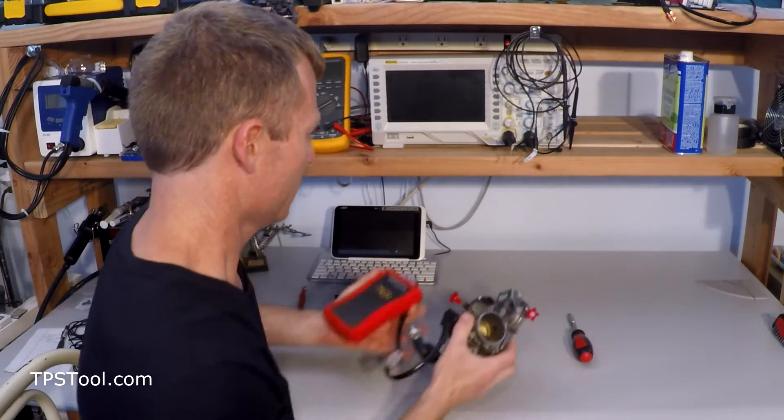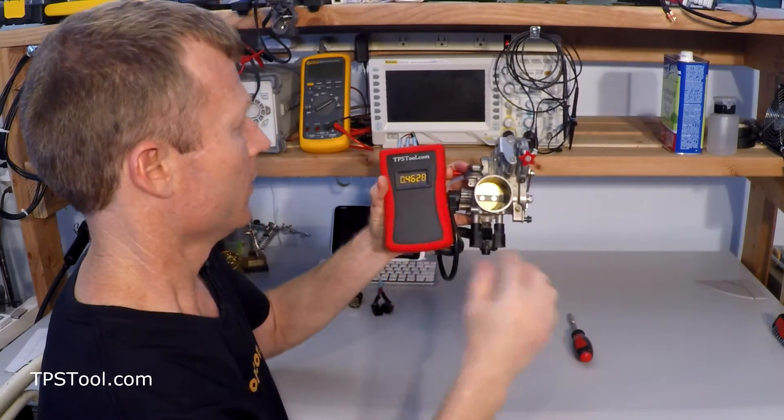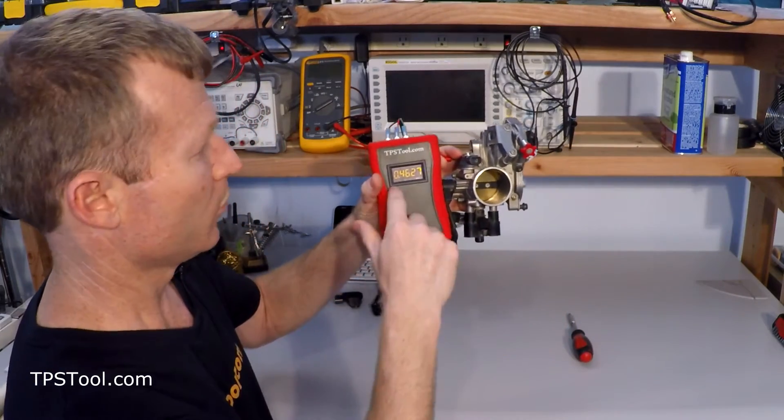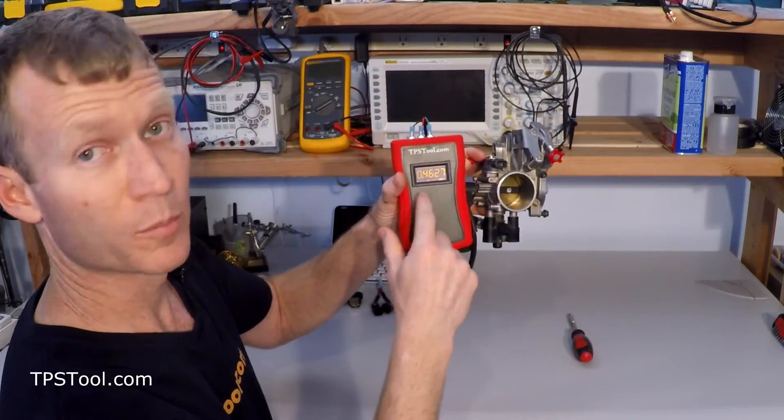To give you an example, I've got our TPSTool Pro Meter here connected to a throttle body. This is from the KTM, and you'll notice the number on here, 0.46, that's at idle. So as I open the throttle, watch the throttle plate and watch the numbers increase.